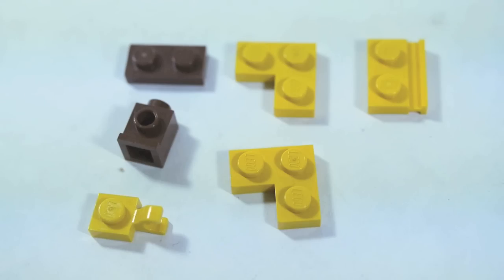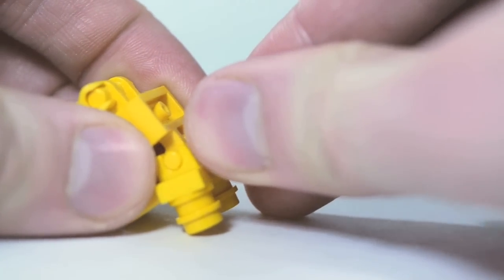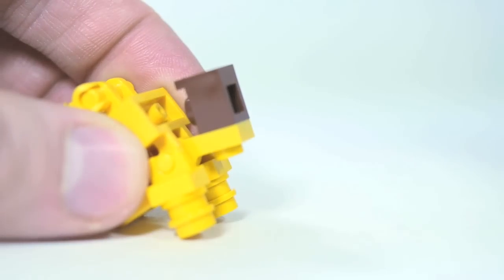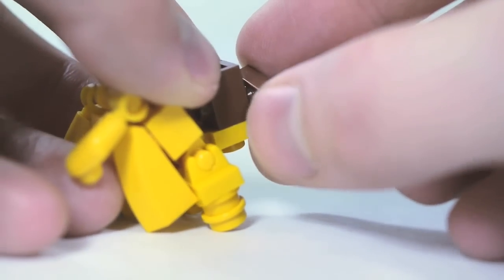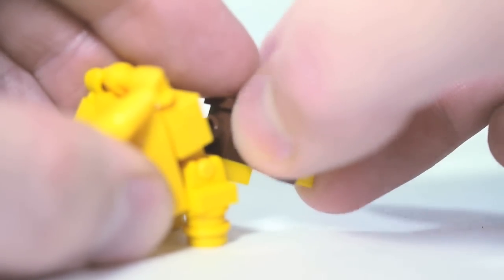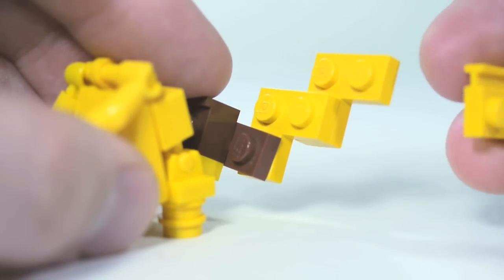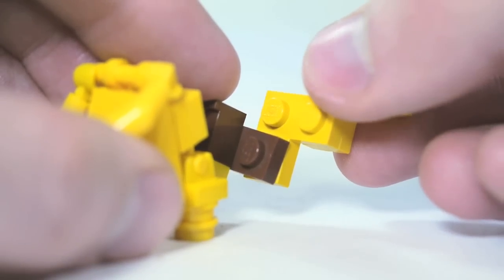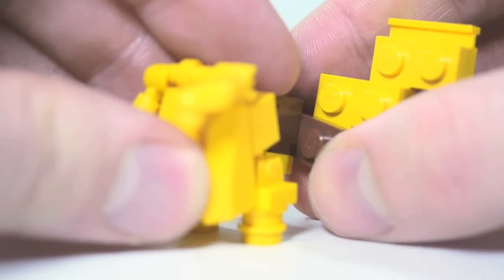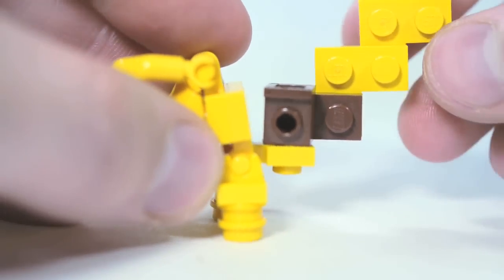These are the pieces you need for Pikachu's tail. So take the Pikachu body you just built. Take a 1x1 plate with clip and stick it into the bottom hinge. Then take a 1x1 headlight brick in brown. Stick it on top of that. Then do a 1x2 plate in brown into the back. Behind that, take a yellow corner plate. Then, another yellow corner plate. Then, a yellow 1x2 plate with a lip on the side. Connect that up. That's a nice little Pikachu tail there. It can wave up and down and twist to the side and back when it needs to.